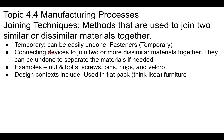Now let's talk about temporary joining techniques. One type is temporary fasteners — things like nuts and bolts, screws, pins, rings, and Velcro. An example is flat-packed furniture like Ikea, where you assemble a shelf or desk from flat parts using temporary fasteners, and you can also disassemble it and return it to its flat form.